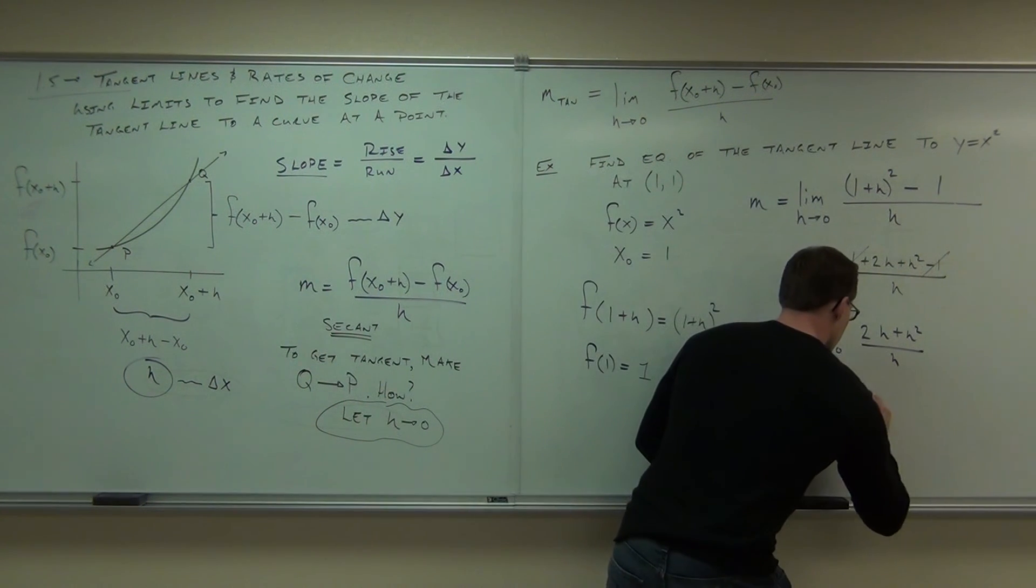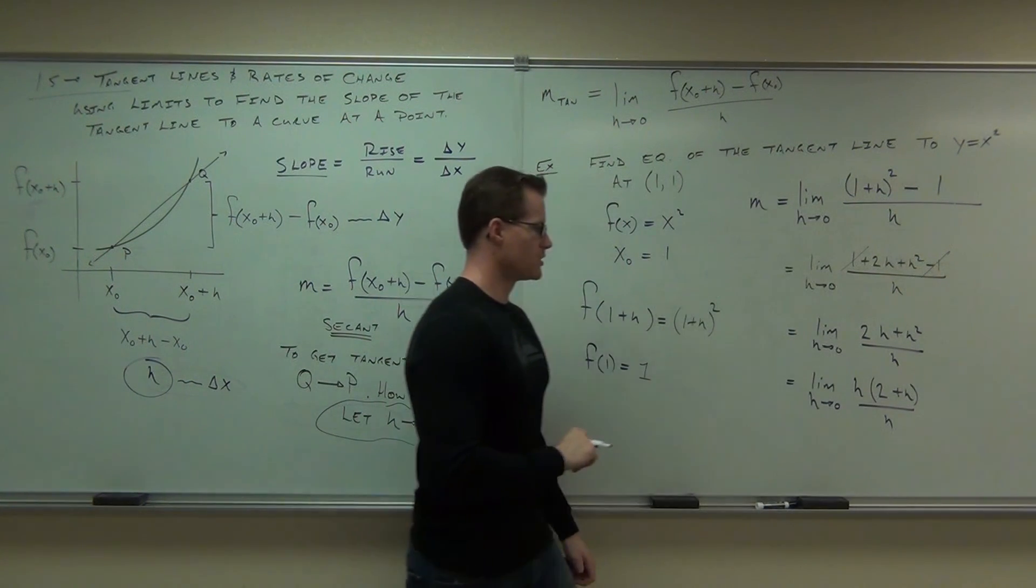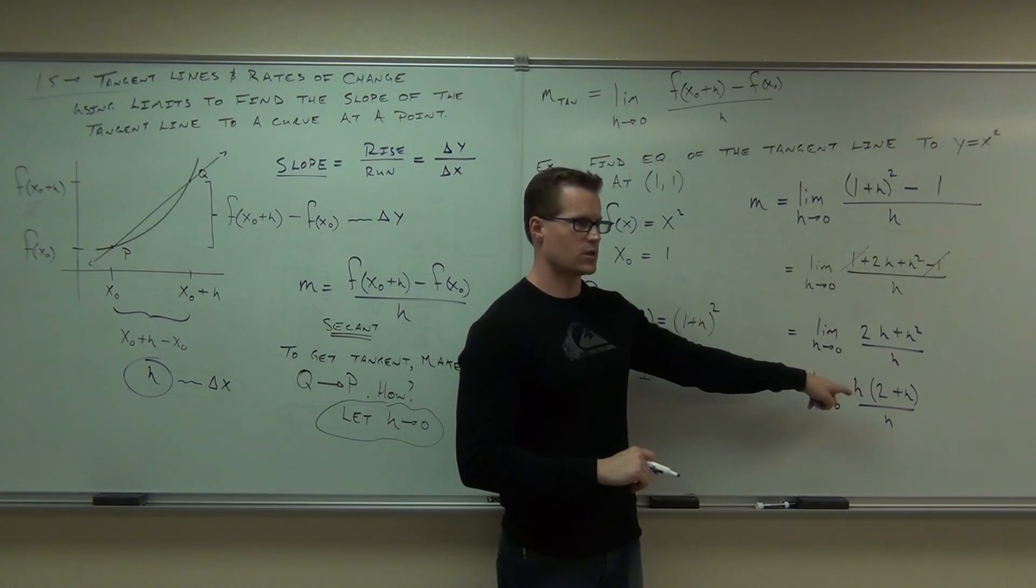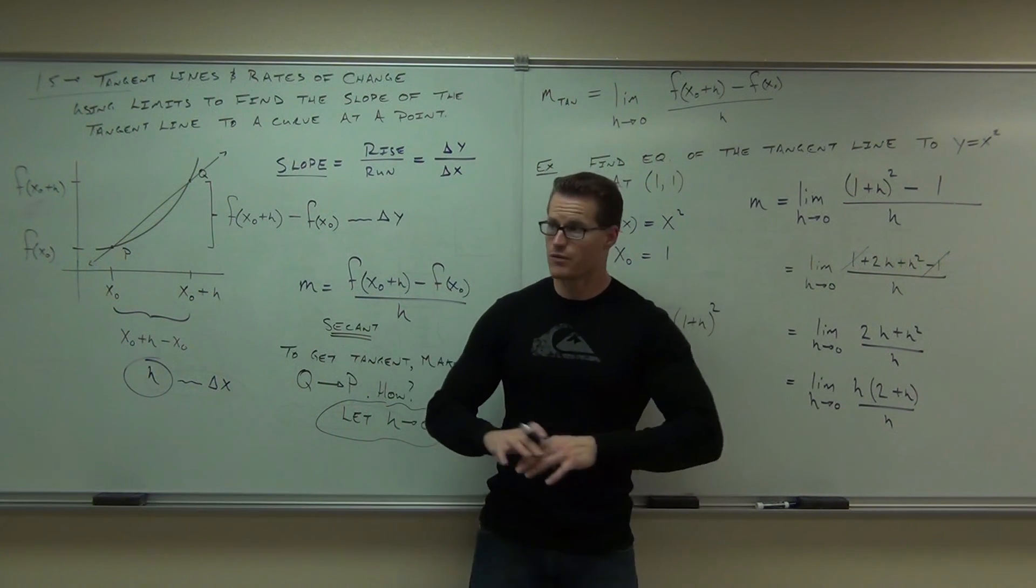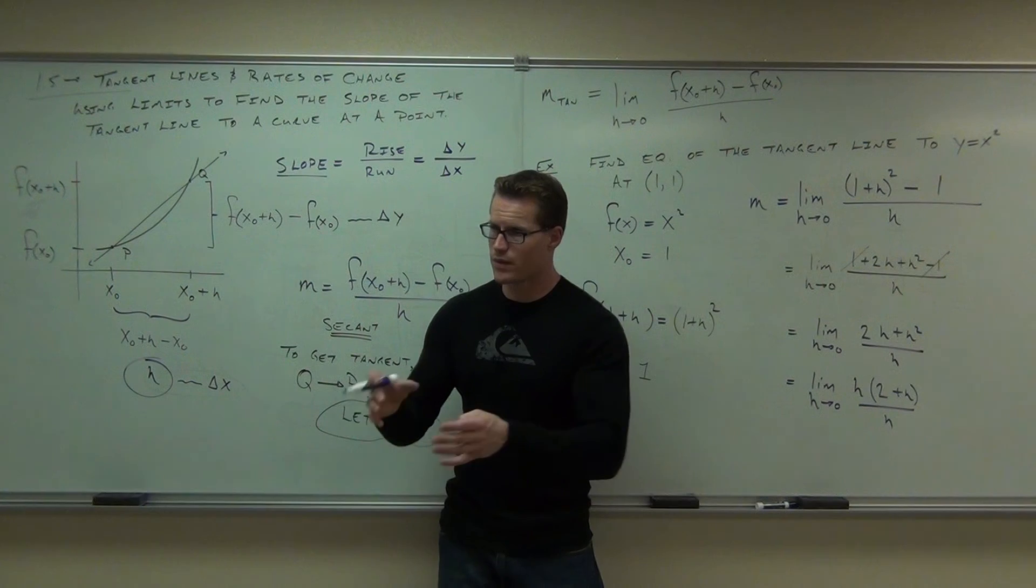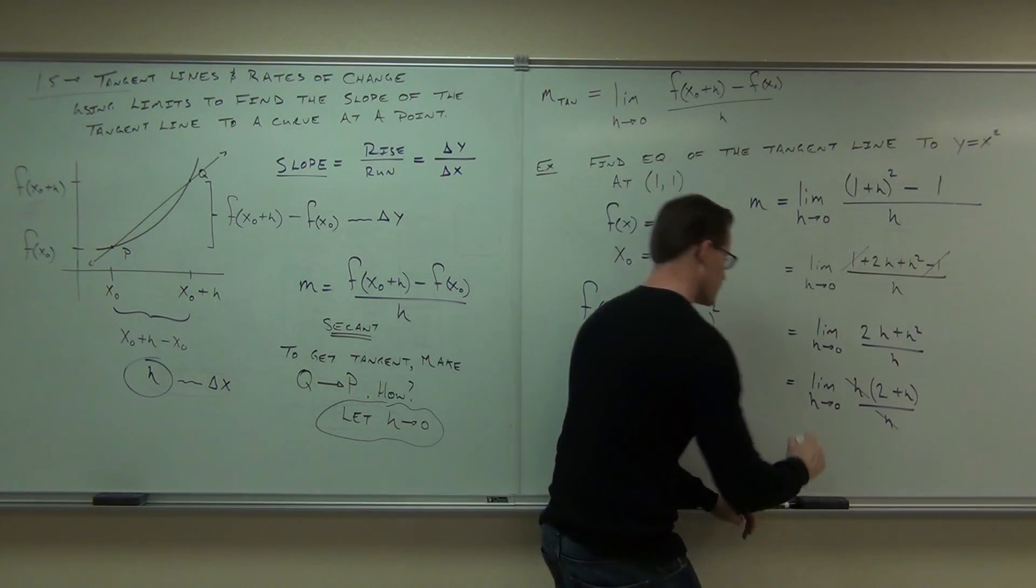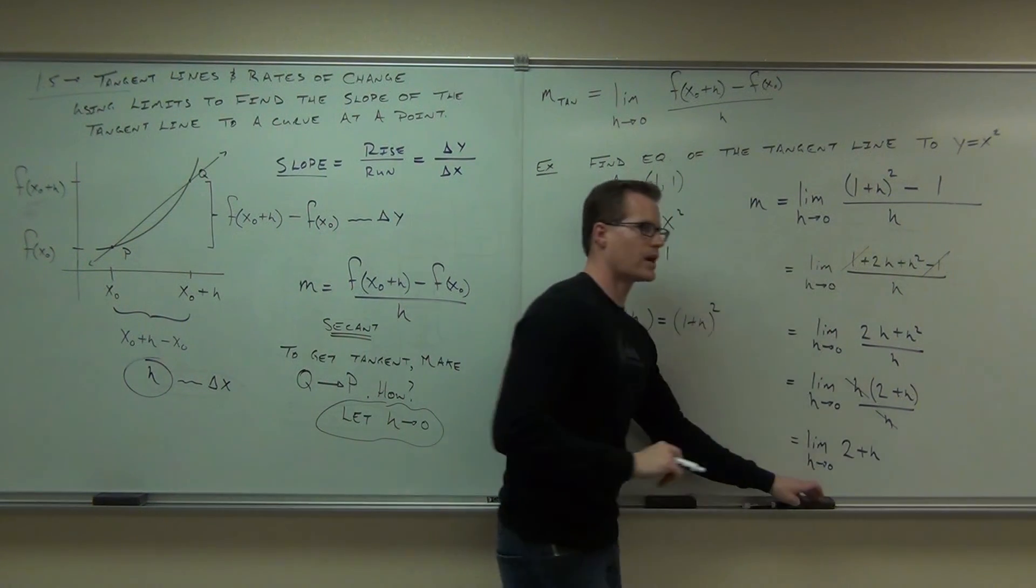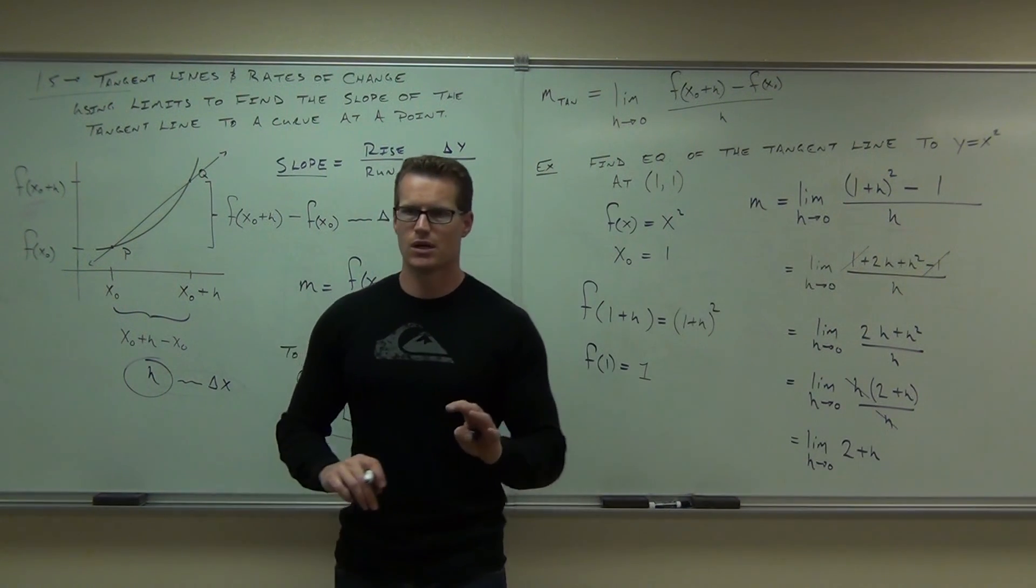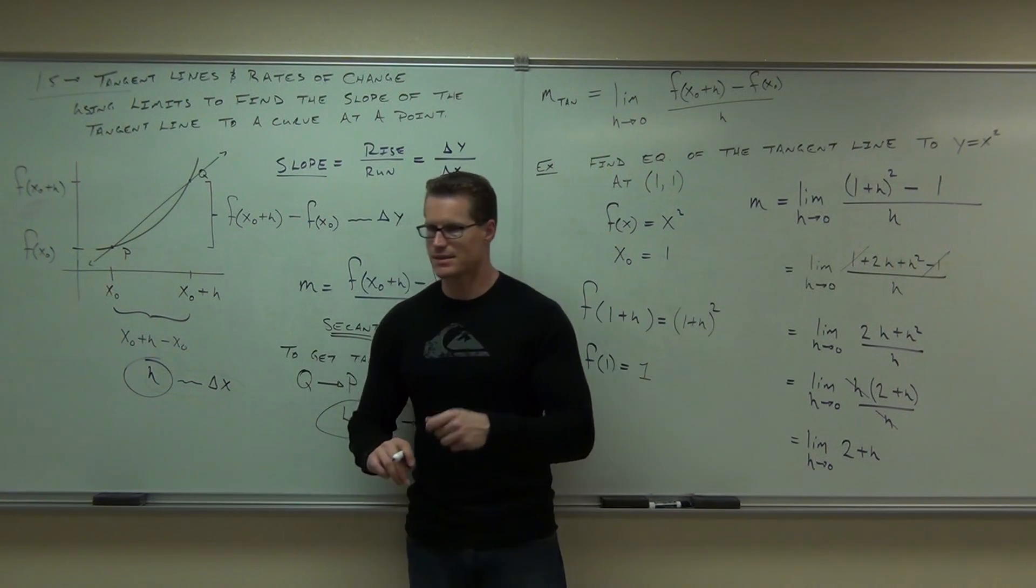So here we have h times 2 plus h over h. Are you okay on the factorization? Can we cross our h's out? Notice how we don't need to get rid of all our h's, right? Just the one that's causing us the problem. Just that one. Notice how I'm still writing the limit. Anytime you have an h, you're going to write the limit. Now, am I okay to evaluate this limit as h goes to 0?